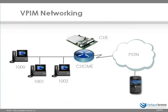Before getting into the details of VPIM and how messages are exchanged between messaging systems, I want to remind you how we can send messages between telephones connected to, for instance, Cisco Unity Express or Cisco Unity Connection. So let me remind you how to send voicemails between telephones — I am not calling from one phone to another, I am sending a voicemail from one phone to another.